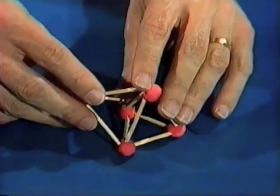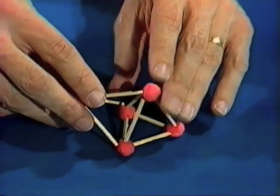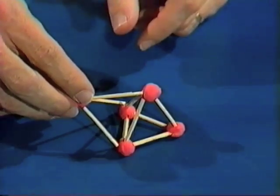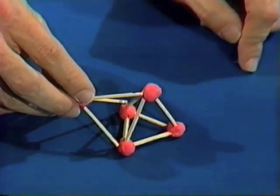We now have the original four from the tetrahedron plus another one, two, three triangles, giving us a total of seven triangles from six matchsticks.